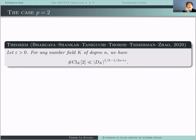This was the situation until the work by Bhargava, Shankar, Taniguchi, Thorne, Zimmermann, and Zhao — published in 2020 but proved probably two or three years before. For the first time, they could handle infinitely many cases. From now on P is going to be two always, but N can be anything — it's fixed but can be as large as we want. They obtain a saving of one over 2N in this case.